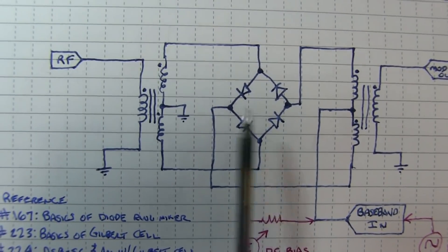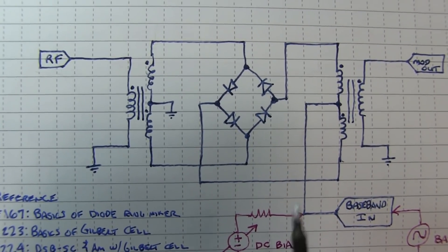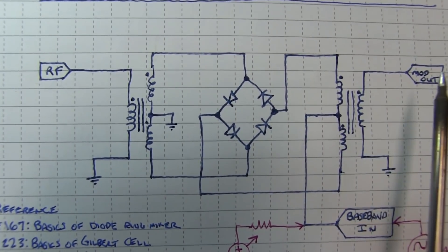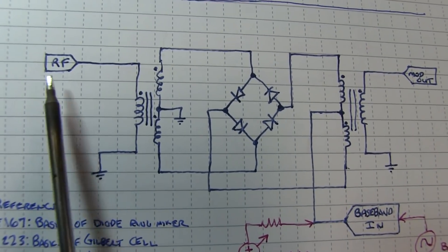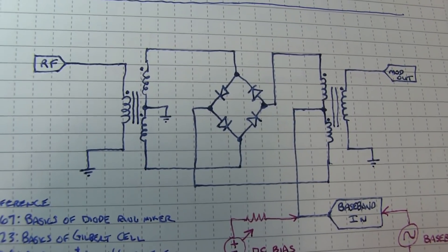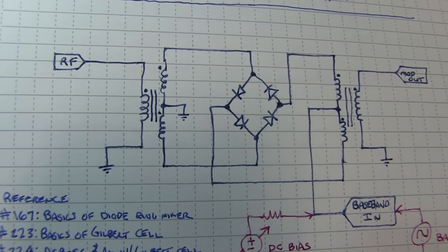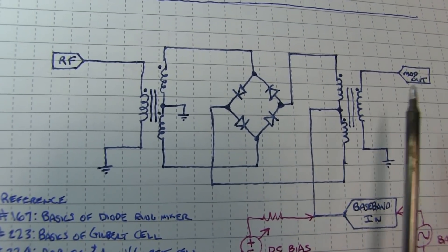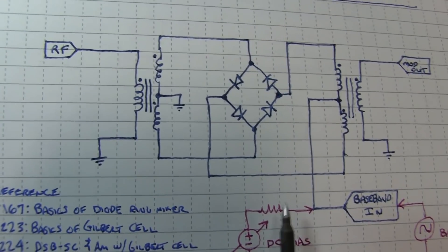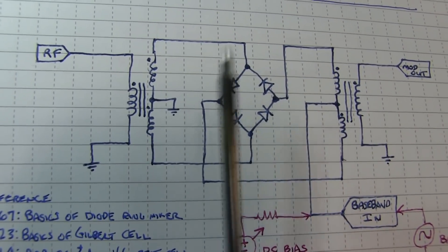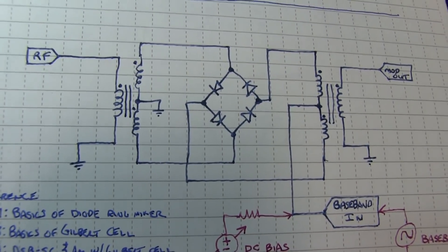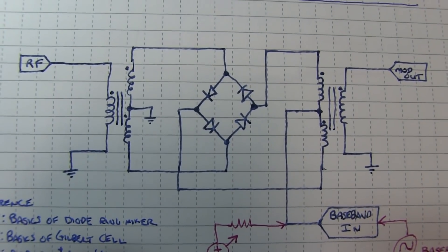Because the natural operation of a double balance mixer, the balance meaning that the two inputs essentially get cancelled out and you're only left with the sum and difference frequencies. Now of course, if you're doing a modulator, that means you're going to get rid of the carrier, you're going to get rid of the baseband, you're only going to get carrier plus baseband and carrier minus baseband. And that's the definition of double sideband suppressed carrier.